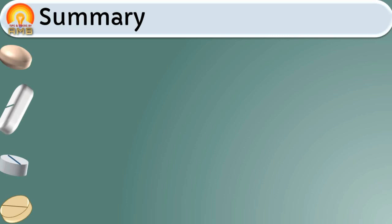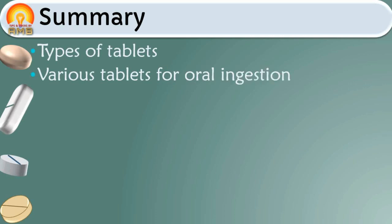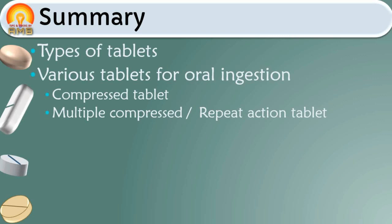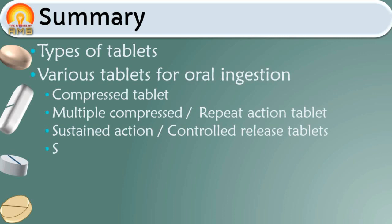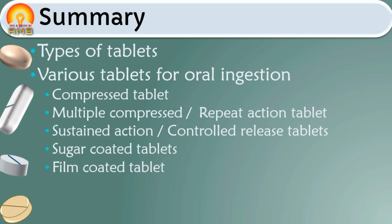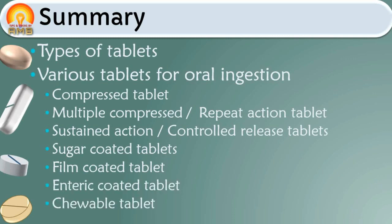Now it's time to summarize today's session. We discussed that tablets are of different types: tablets for oral ingestion, tablets used in oral cavity, tablets used by other routes, and tablets used for preparation of solution. We discussed various subtypes of tablets for oral ingestion in detail: compressed tablet, multiple compressed tablet, repeat action tablet, sustained action tablet or controlled release tablet, sugar coated tablet, film coated tablets, enteric coated tablets, and chewable tablets.